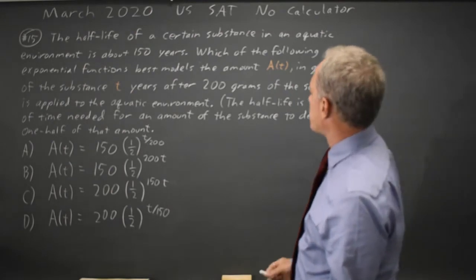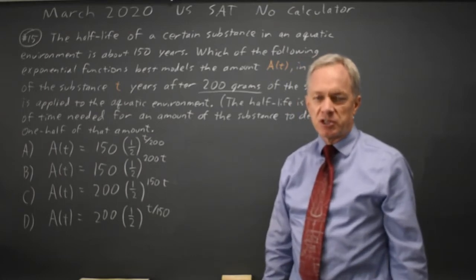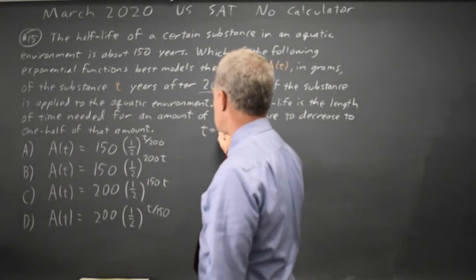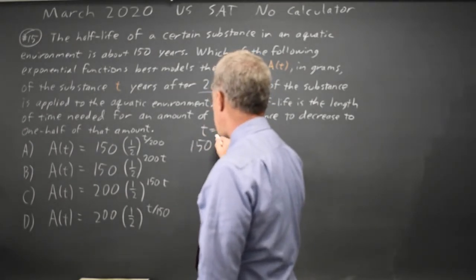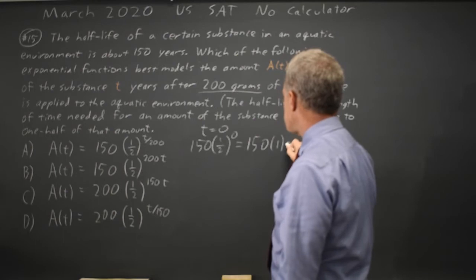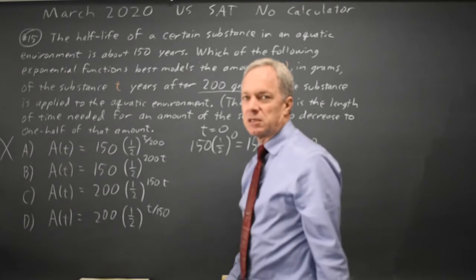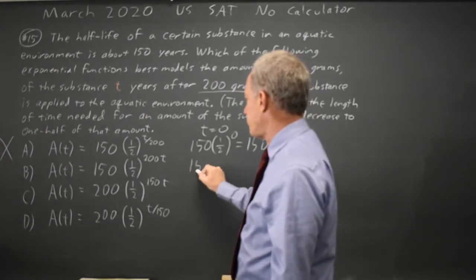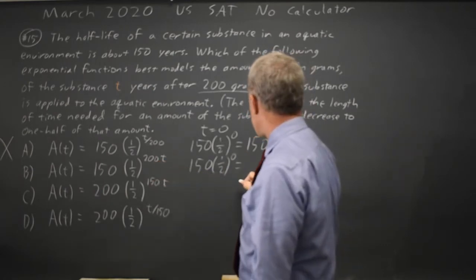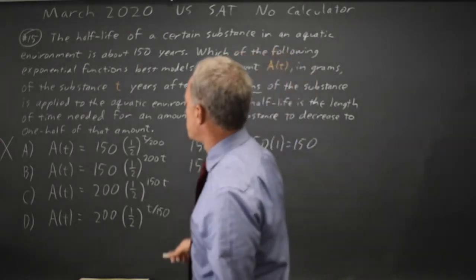I'm going to take the first fact: we start with 200 grams. So at t equals 0, the correct model should give us 200. If I put t equals 0 into choice A, I get 150 times one-half to the 0, which is 150 — that's not correct, so choice A is eliminated. Choice B is also 150 times one-half to the 0, which is also 150. But we start with 200 grams, so B is not correct either.